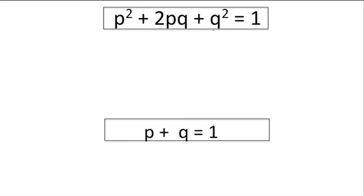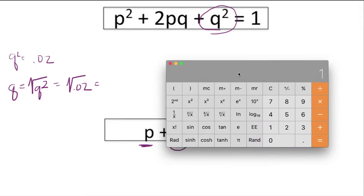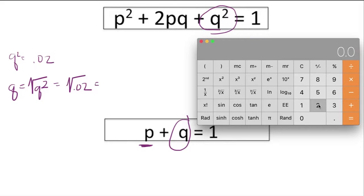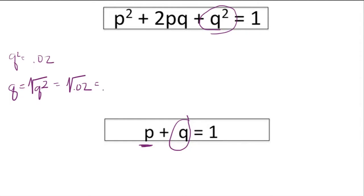We know this portion is 0.02, that was given to us in the problem, so q² equals 0.02. At this point we can figure out what q is so that we can further figure out p. q is simply the square root of q², which is the same as the square root of 0.02. If we pull out our calculator, 0.02, take the square root of that, we'll get 0.1414 for q.